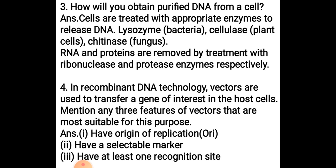Question number three: how will you obtain purified DNA from a cell? Cells are treated with appropriate enzymes to release DNA. For example, bacteria are treated with lysozyme. Plant cells are treated with cellulase, since the plant cell wall is made up of cellulose. In fungi, the cell wall is made up of chitin, so the enzyme used is chitinase. These enzymes are used depending on the type of organism in order to release the DNA.